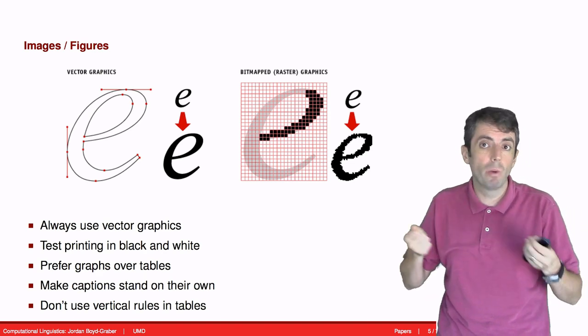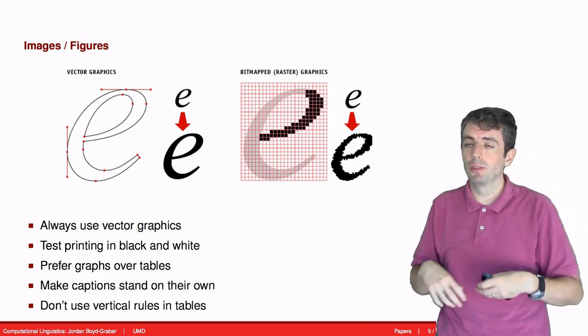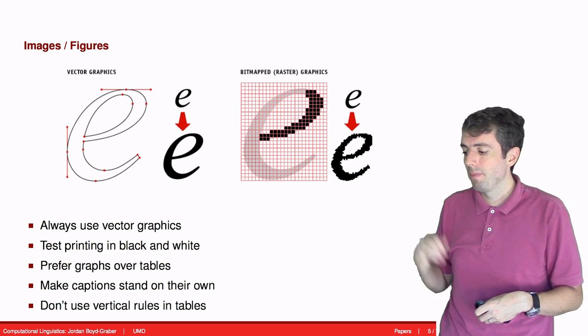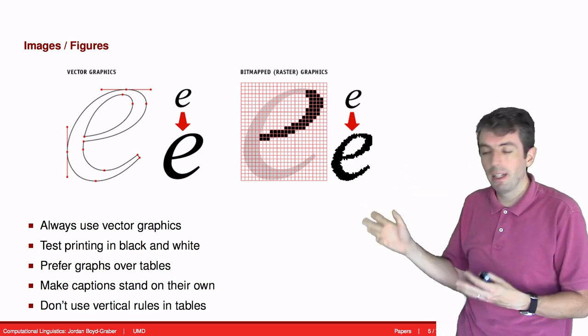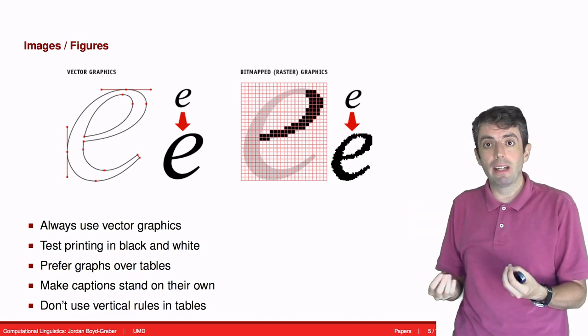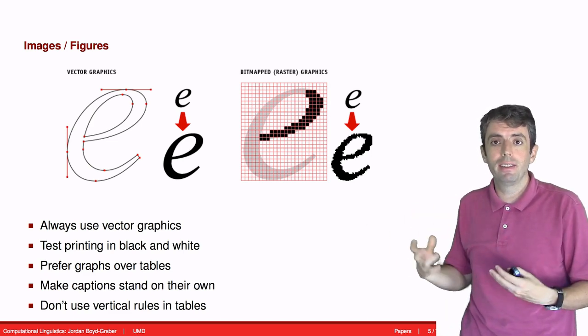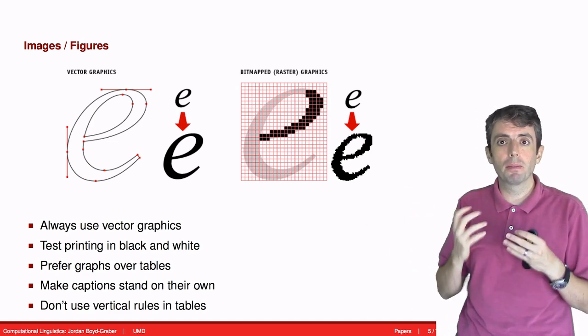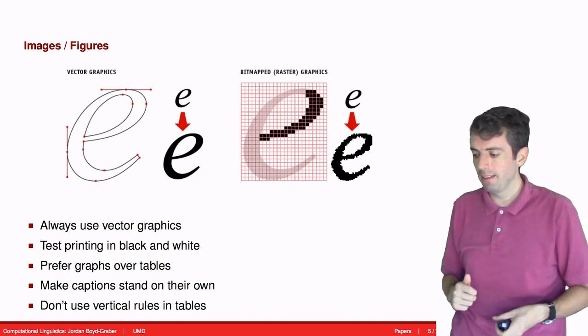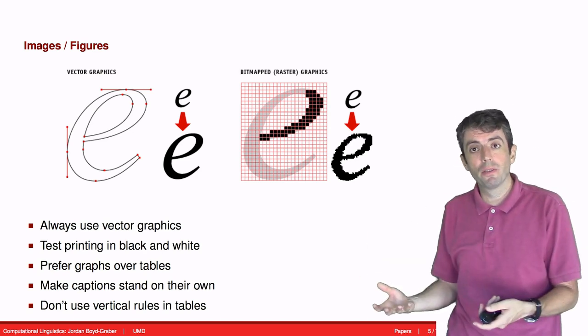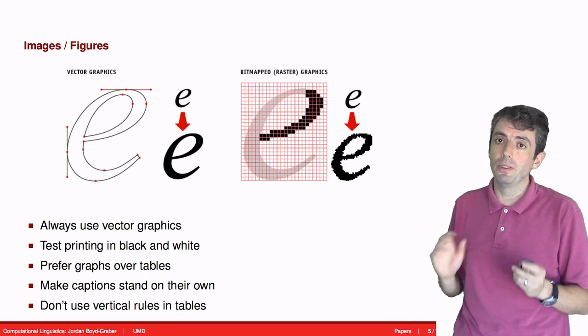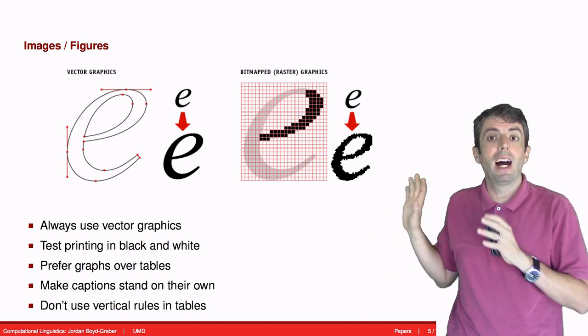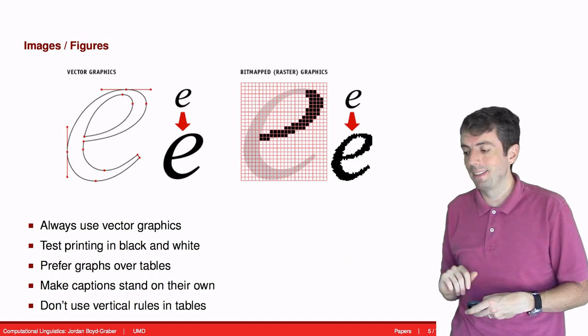Whenever you have figures, whether it be table or graphics or charts, use effective captions. Explain what's going on, what's the takeaway of this figure. Don't just say, this is accuracy versus time. Explain why the reader should care about that. And in your tables, don't use vertical lines. Only use horizontal lines and use them sparingly. Again, I have more about this on my style page.